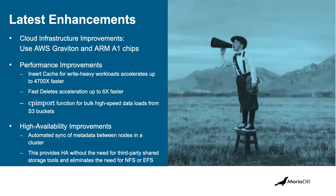Our main source of importing data is a utility that comes with the product called CP Import. It's a command line utility used for bulk high-speed data load. You can do it from any kind of flat text file, CSV, whatever it happens to be. It can be loaded from your local file system or from an S3 bucket. All these options are available for bulk loading data into ColumnStore, and it's much faster than you've probably ever experienced with a transactional storage engine.